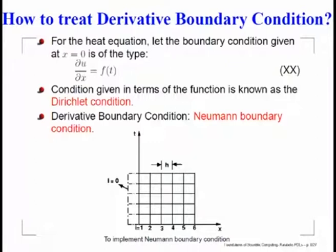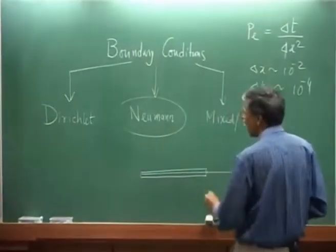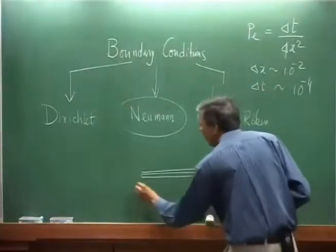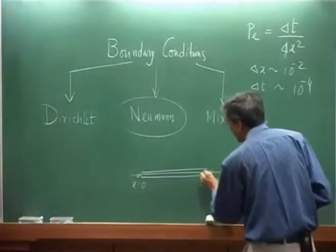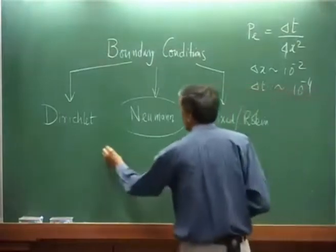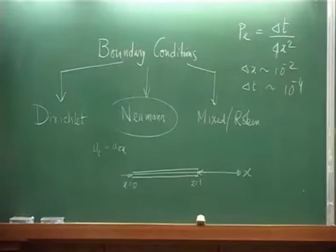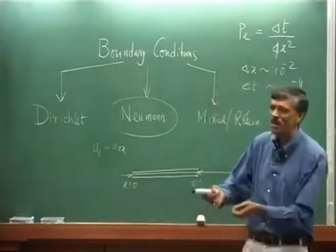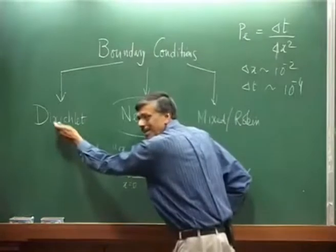Before going further, let us see what happens if we do not have a Dirichlet condition but instead have the Neumann condition — a derivative condition. In the rod problem on the domain [0,1], we could fix the temperature at both ends — giving a Dirichlet condition. However, many times in engineering problems you can also have an insulated boundary: you do not allow any heat transfer at the end, which fixes the temperature.